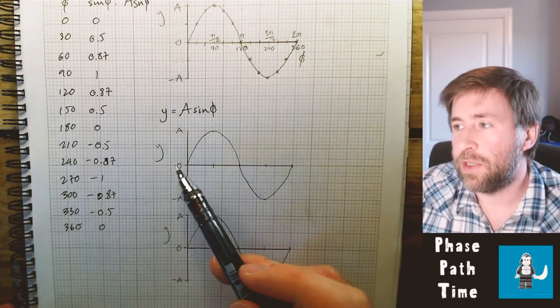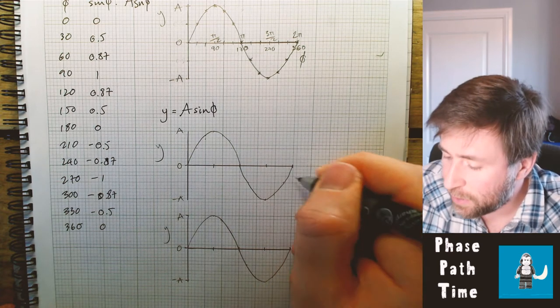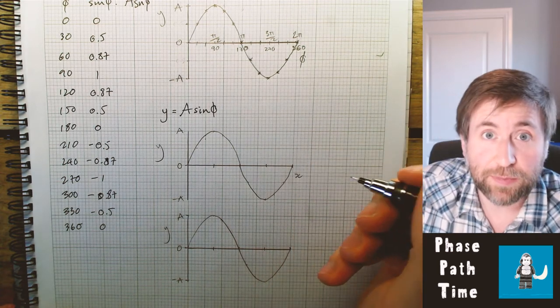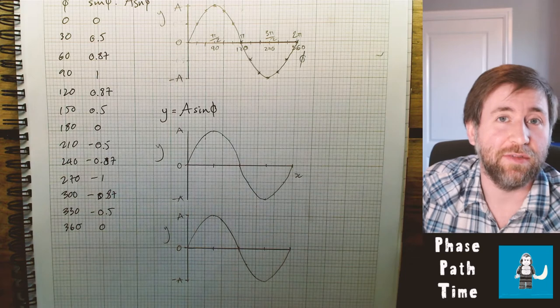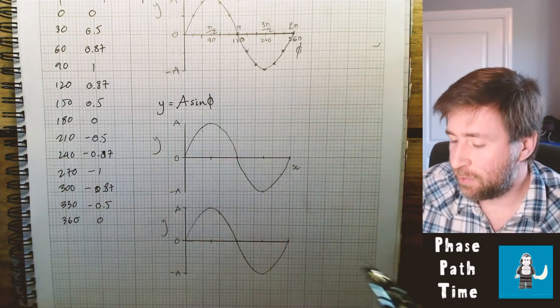So these graphs don't represent the displacement versus phase. This one represents the displacement versus displacement. So this is like a picture of a wave in two dimensions. This one here, this one represents the displacement versus time.